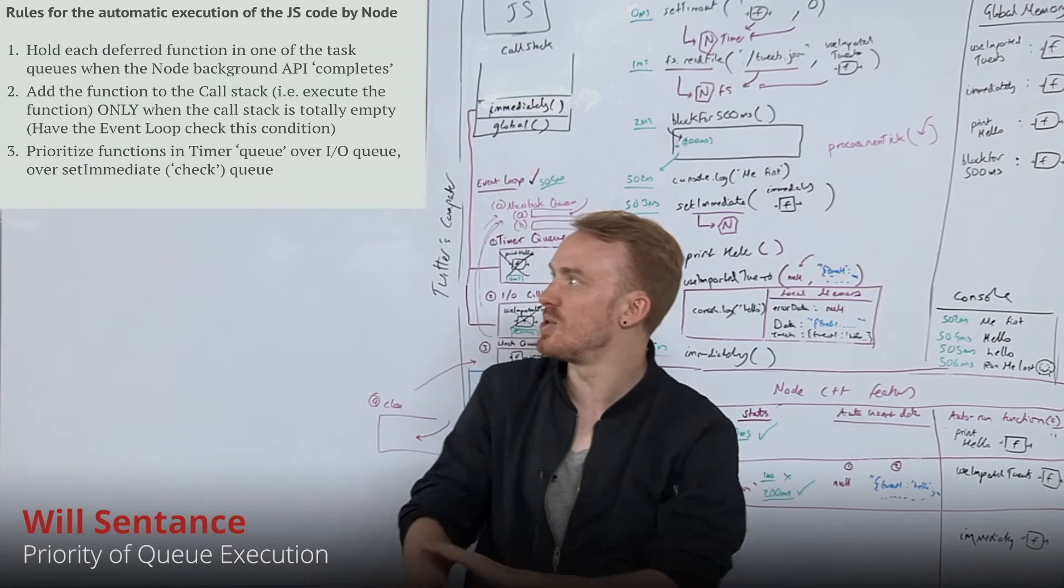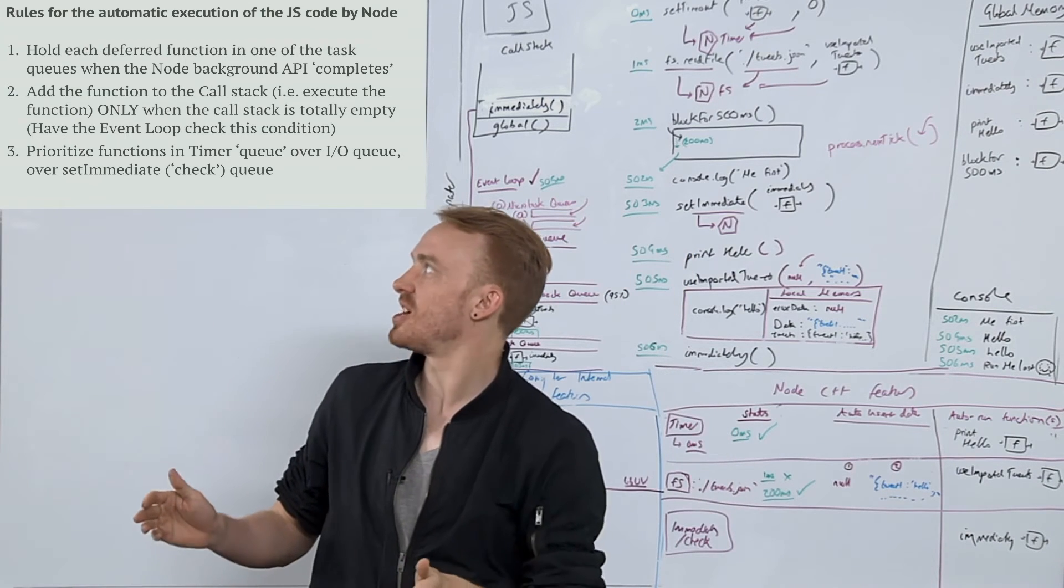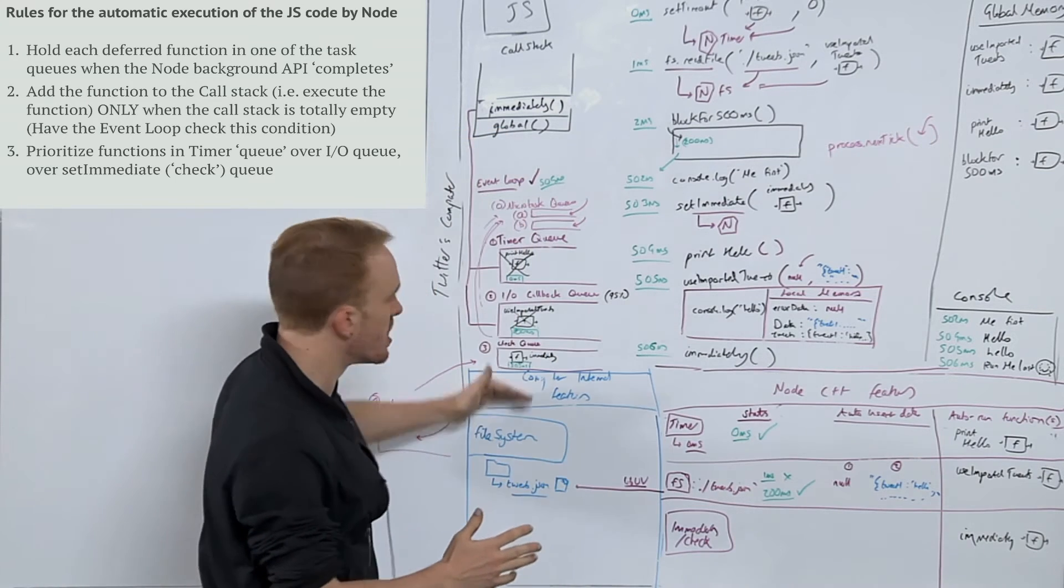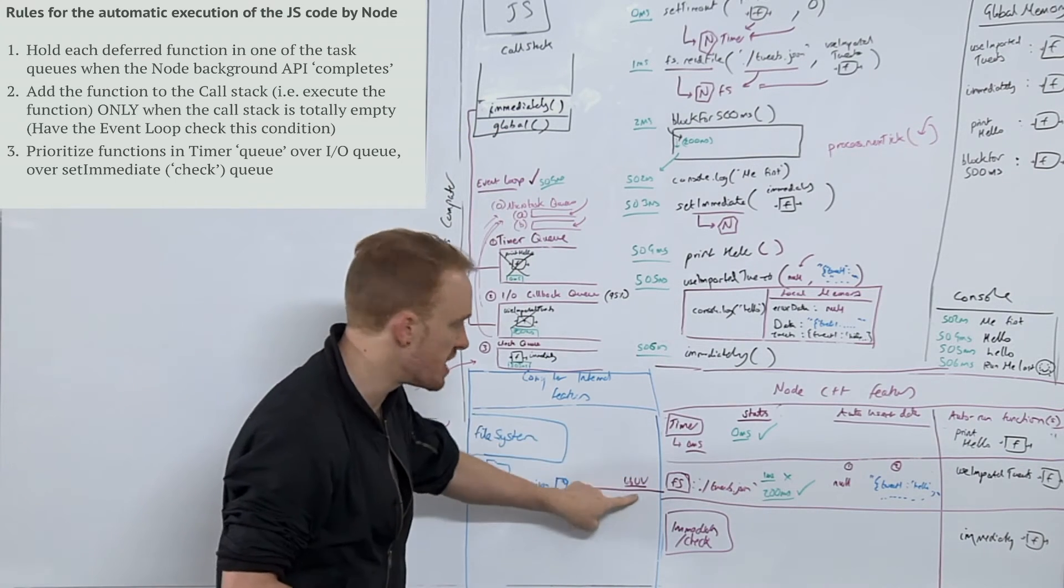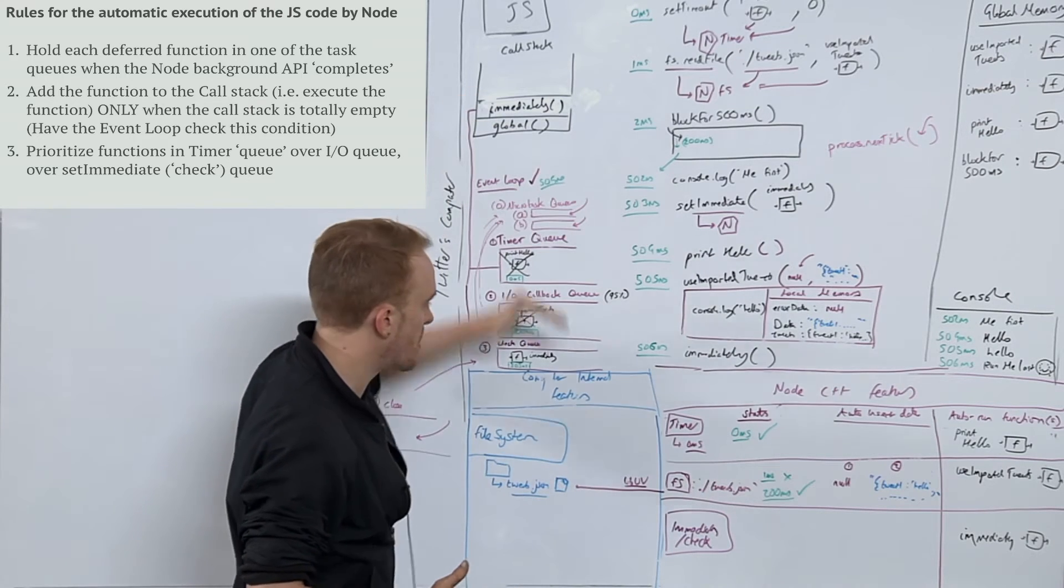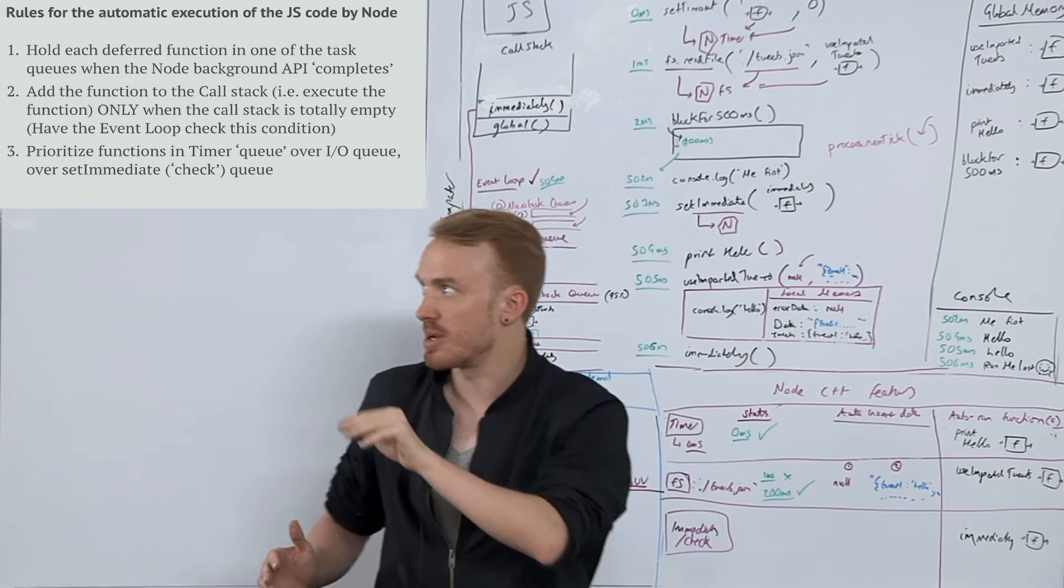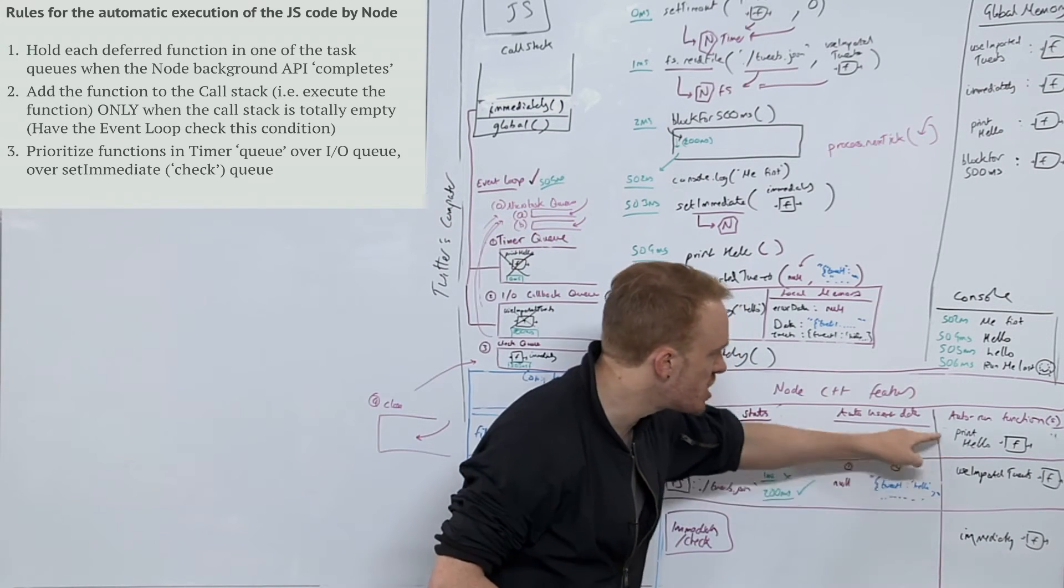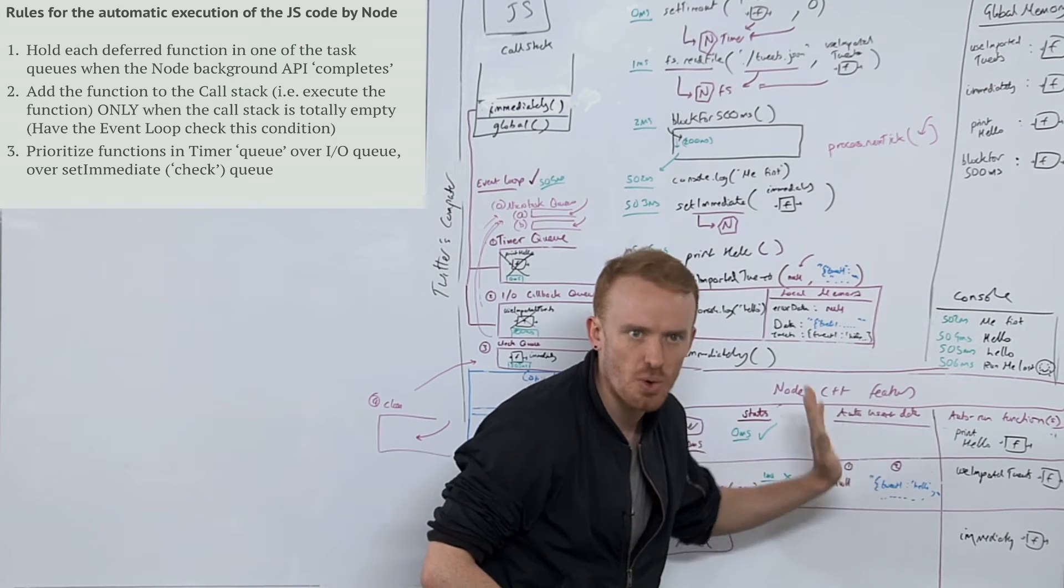Rules for the automatic execution of the JavaScript code by Node, because by the way, all of this is built by Node with the help of LibUV. It's not JavaScript. All of these queues and the event loop of triggering code, it's all Node, not JavaScript, all built in C++.